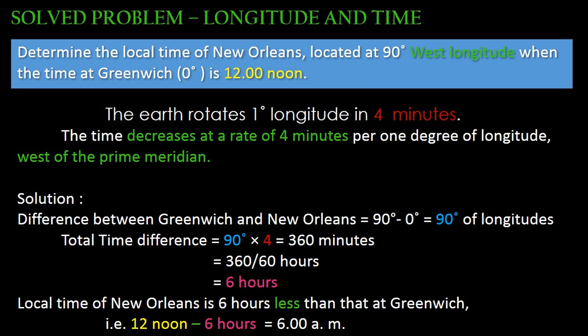We divide 360 by 60, that is 6 hours. The local time of New Orleans is 6 hours less than Greenwich: 12 noon minus 6 hours is equal to 6 am.